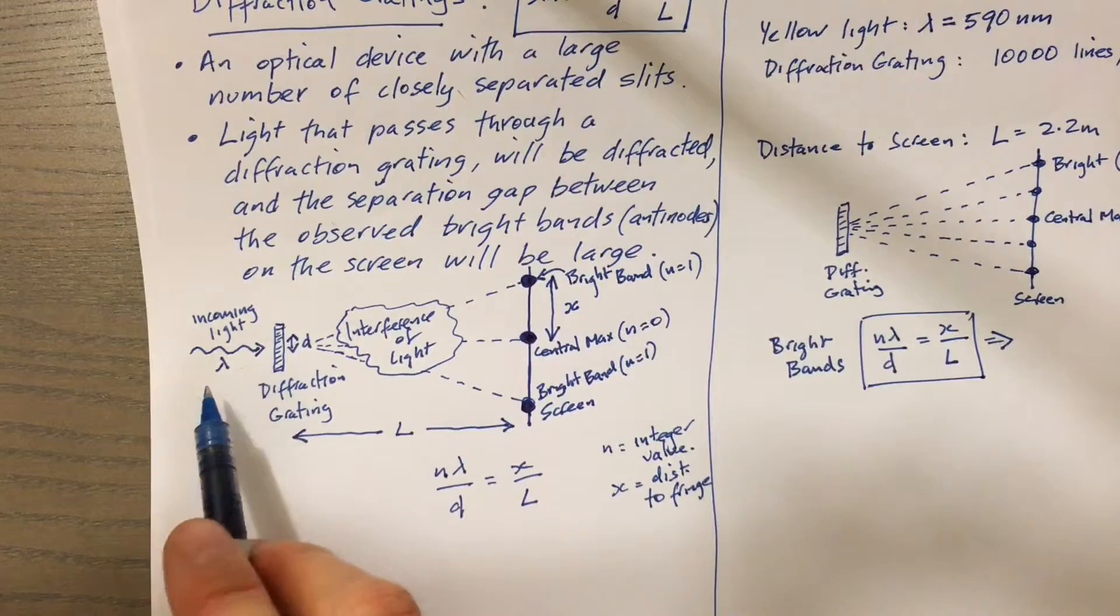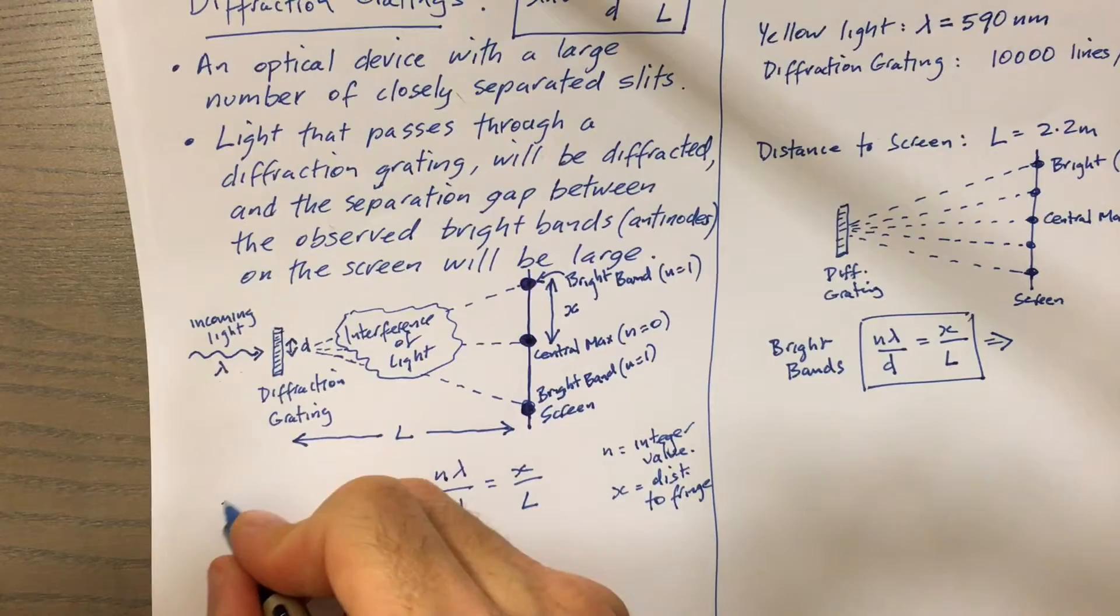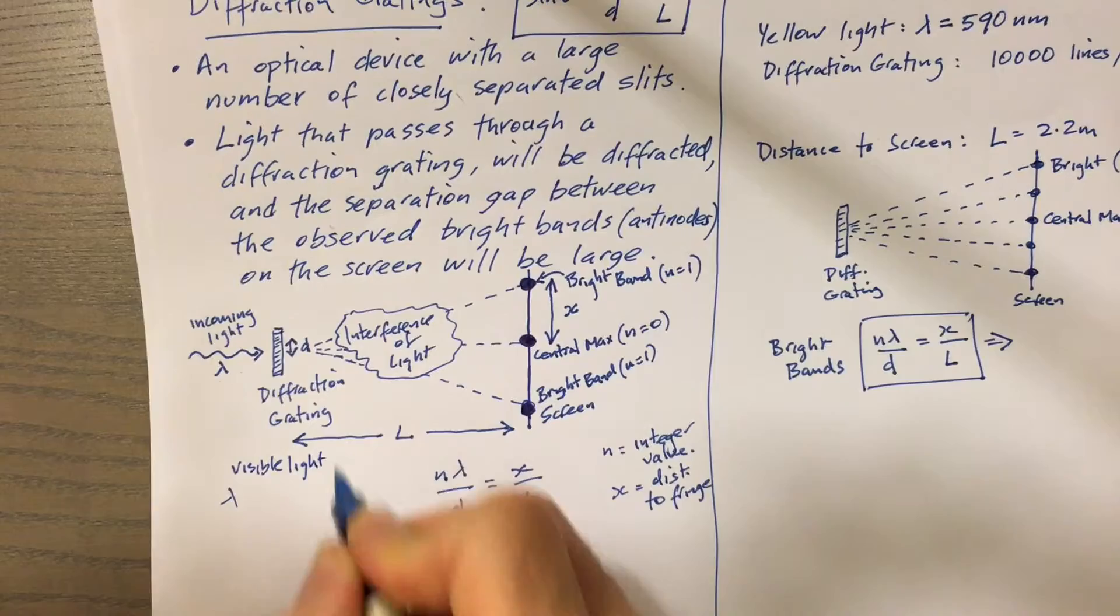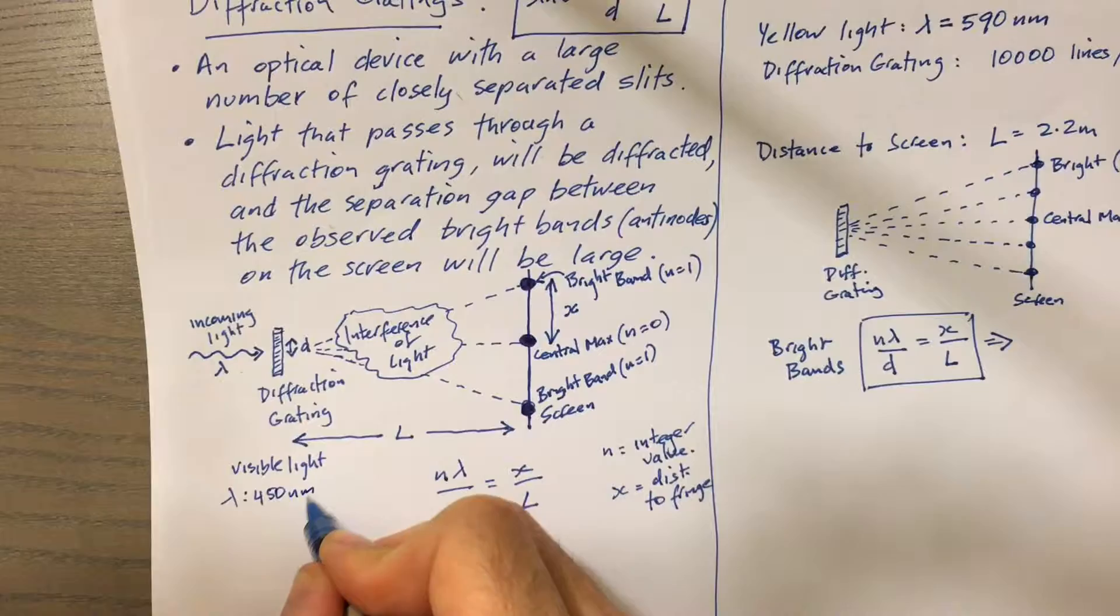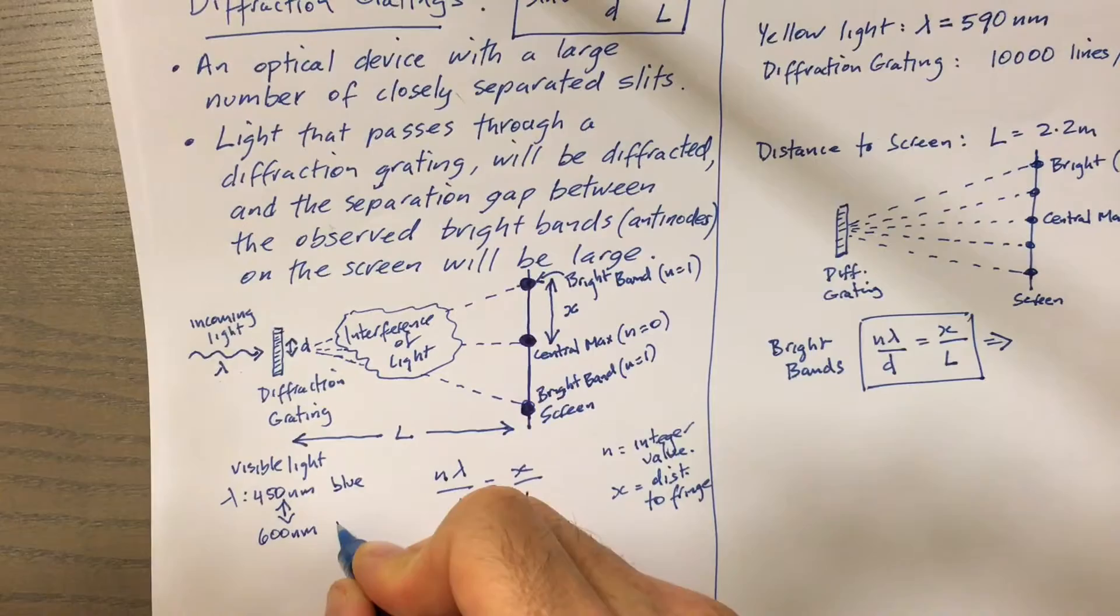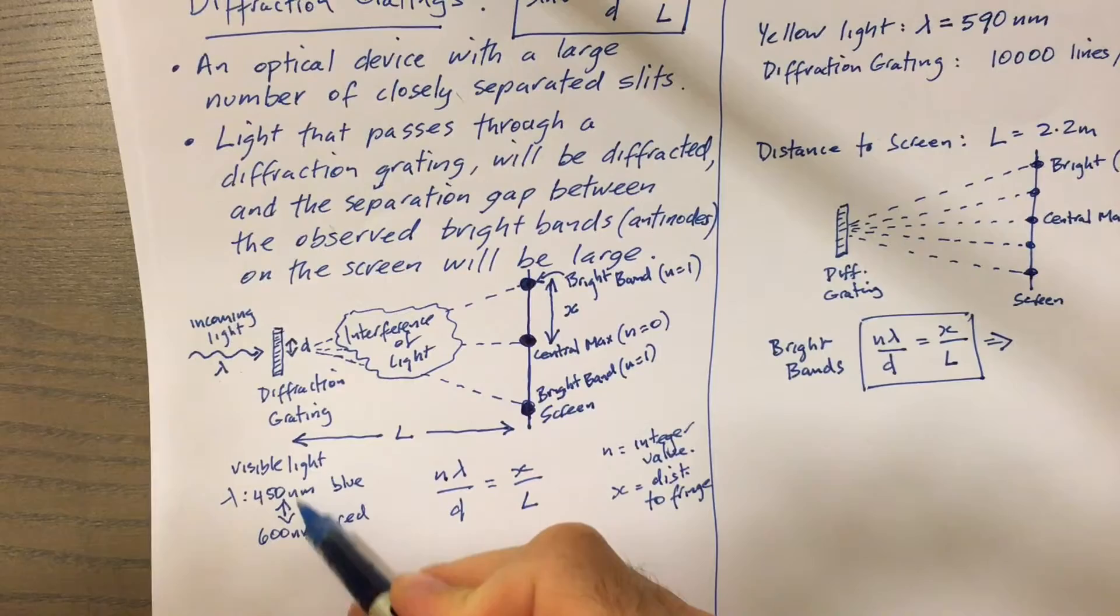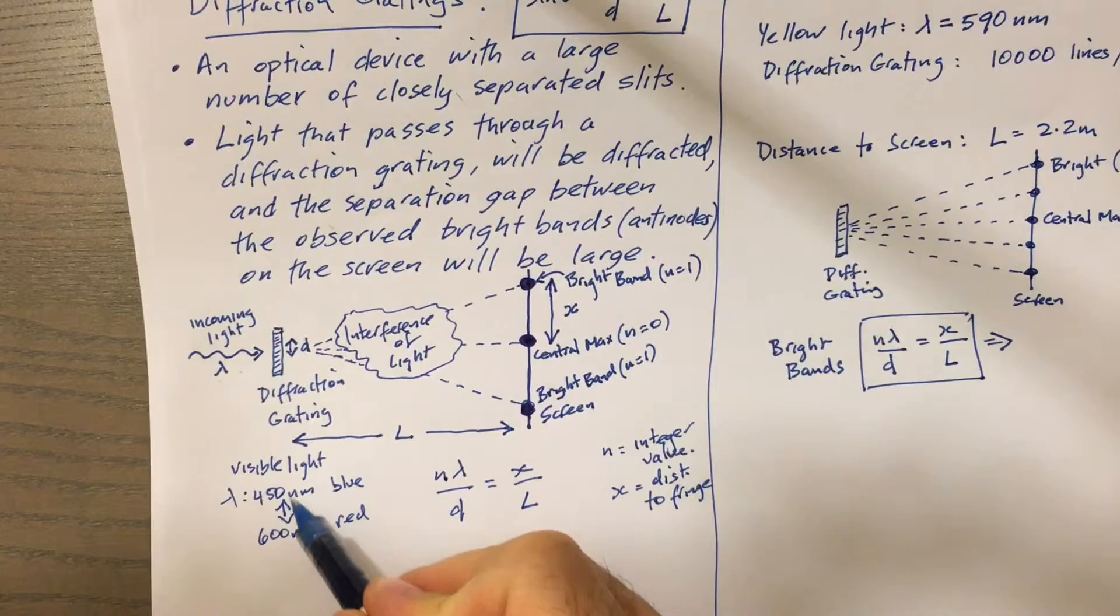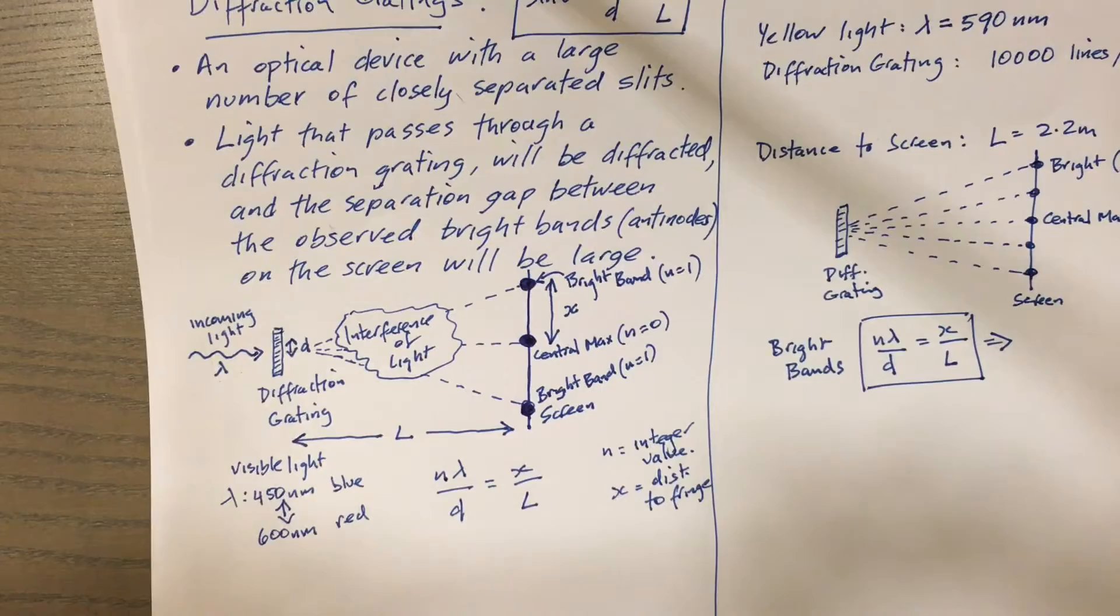Lambda is the wavelength of the incoming light. For most of these experiments we look at visible light, which has a range of anywhere between about 450 nanometers up to about 600 nanometers. The smaller wavelength stuff is like blue light, the longer wavelength stuff is like red light. In the scheme of electromagnetic radiation this is a very small window of wavelengths, but the effects of the change in wavelength from blue to red is certainly noticeable in a diffraction gradient.